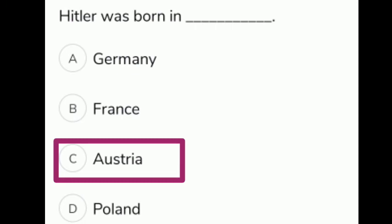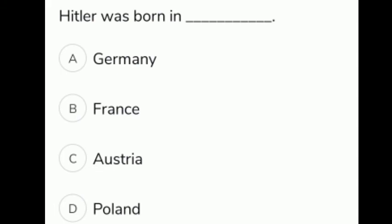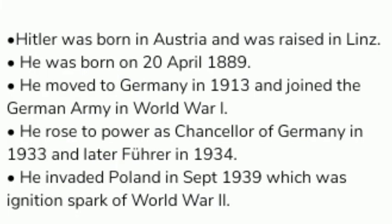Hitler was born in which country? The given options are A Germany, B France, C Austria, D Poland. The correct answer is option C, Austria. Hitler was born in Austria and was raised in Linz. He was born on 20 April 1889. He moved to Germany in 1913 and joined the German army in World War I. He rose to power as Chancellor of Germany in 1933 and later as Führer in 1934. He invaded Poland in September 1939, which was the ignition spark of World War II.